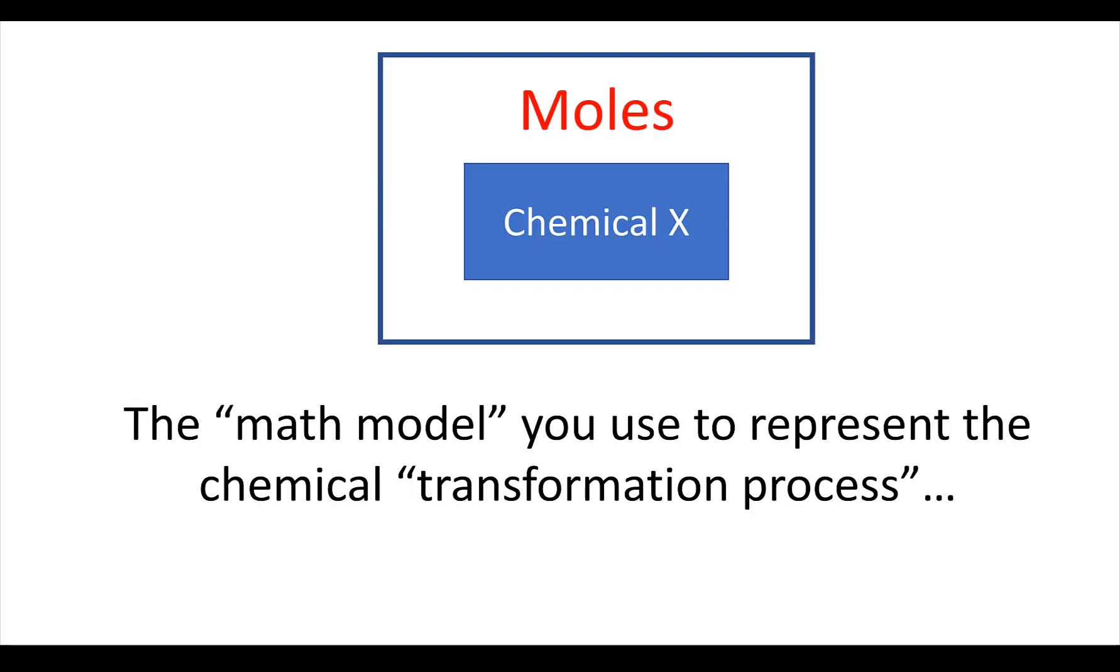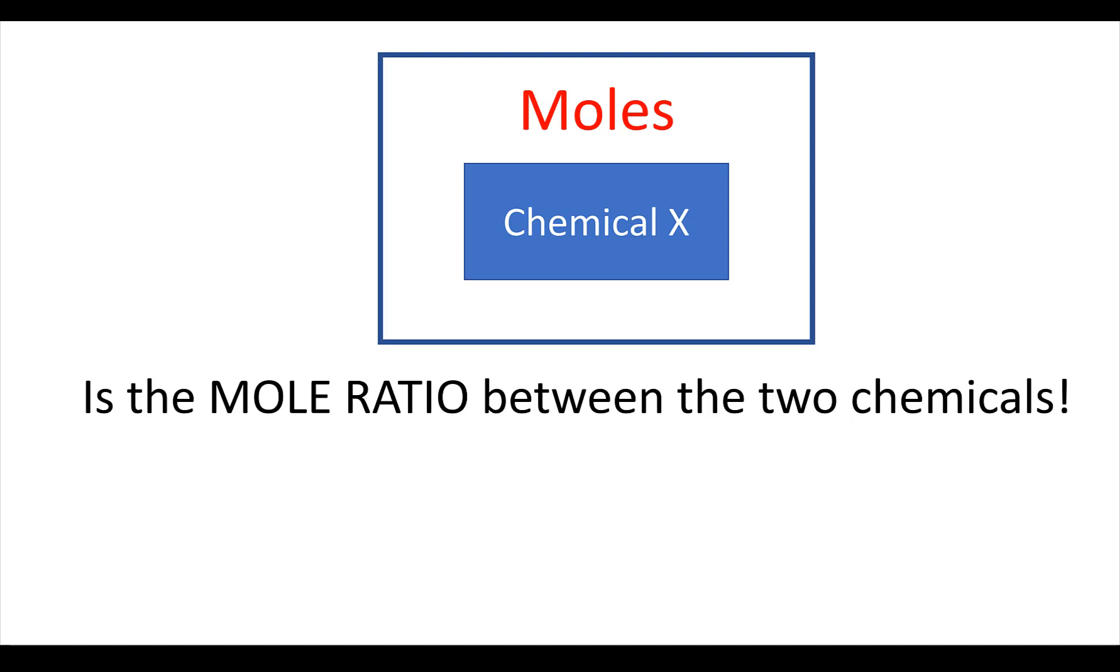But that wasn't the only thing we did. We also had this transformation process. And the mathematical model we use to represent this transformation process is called the molar ratio. We get it from the chemical equation. In order to go from chemical X and figure out how much chemical Y is associated, we multiply by the molar ratio of Y to X.